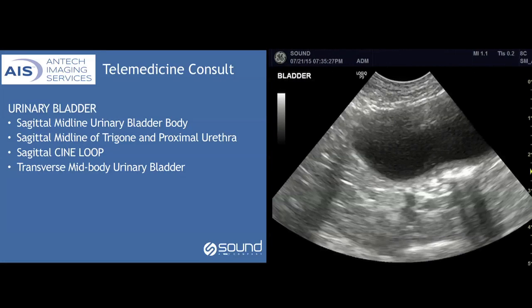Having a transverse image at the mid-body of the urinary bladder will also help. Making sure you evaluate the urinary bladder in transverse — both in the cranial as well as caudal aspects of the urinary bladder and urethra — is necessary for a complete evaluation, but only needs to be submitted if pathology is present.